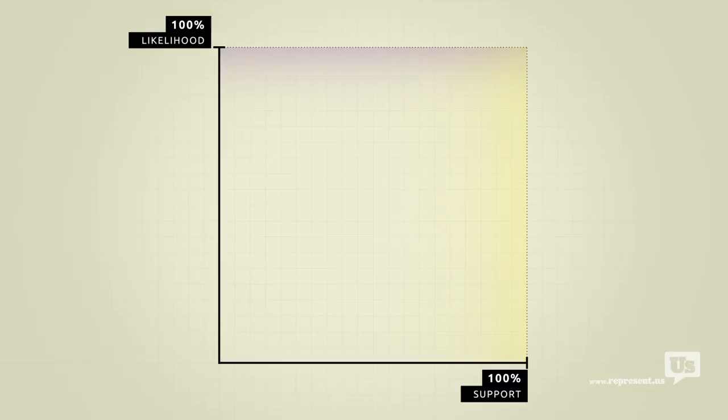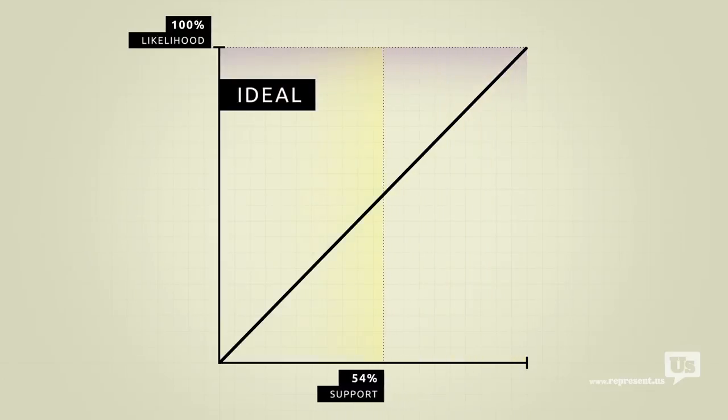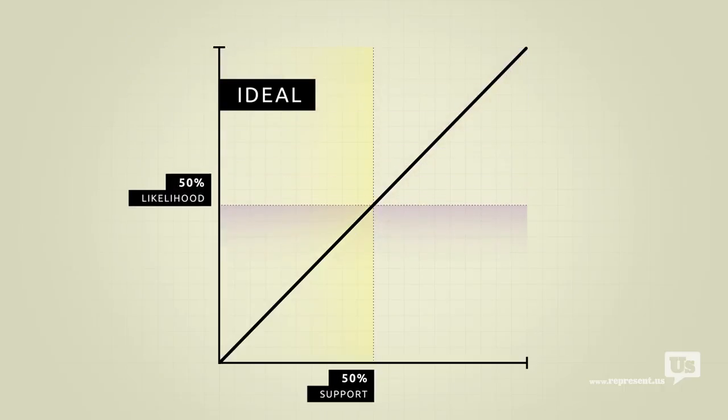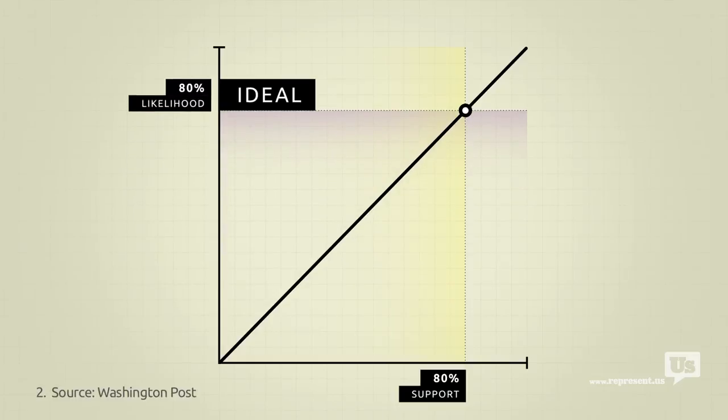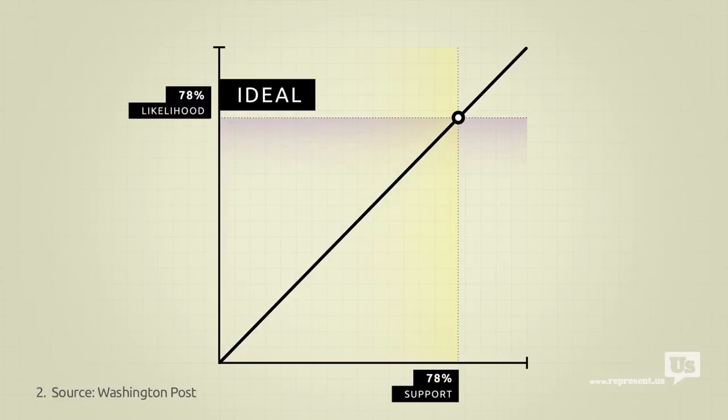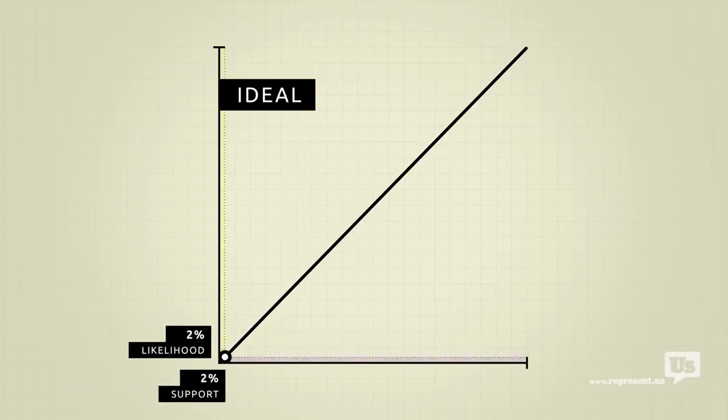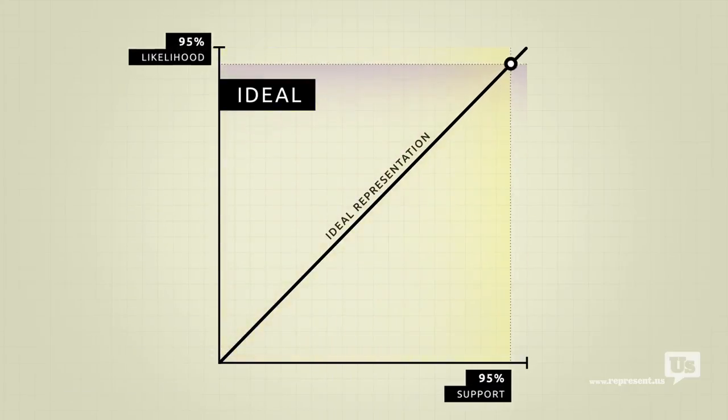On this graph, an ideal republic would look like this. If 50% of the public supports an idea, there's a 50% chance of it becoming law. If 80% of us support something, there's an 80% chance. You get the idea. Now, most Americans would probably agree that, with a few exceptions, we should be as close to this ideal as possible.